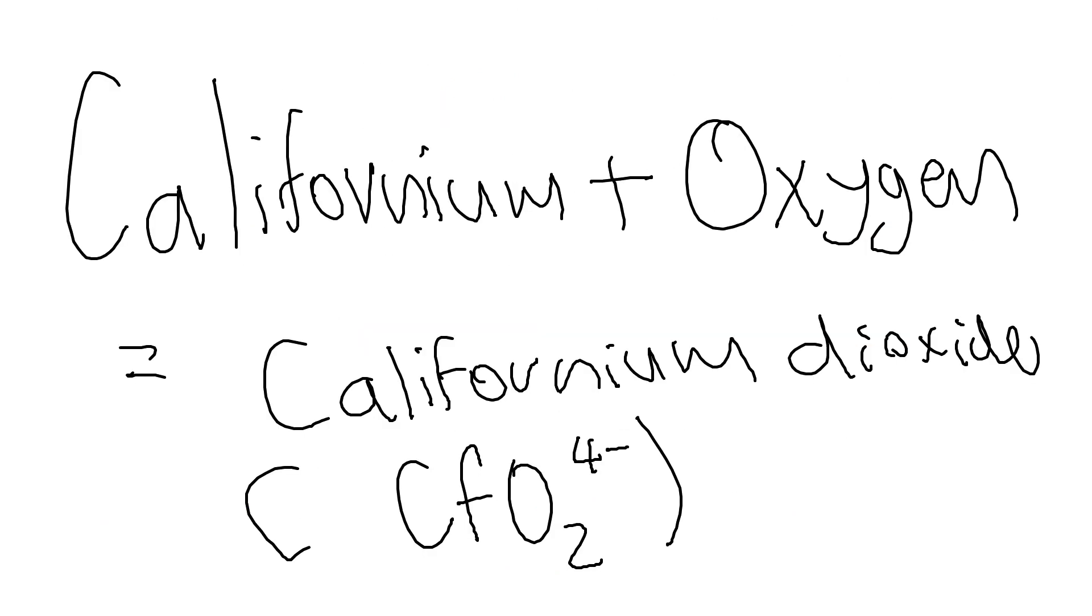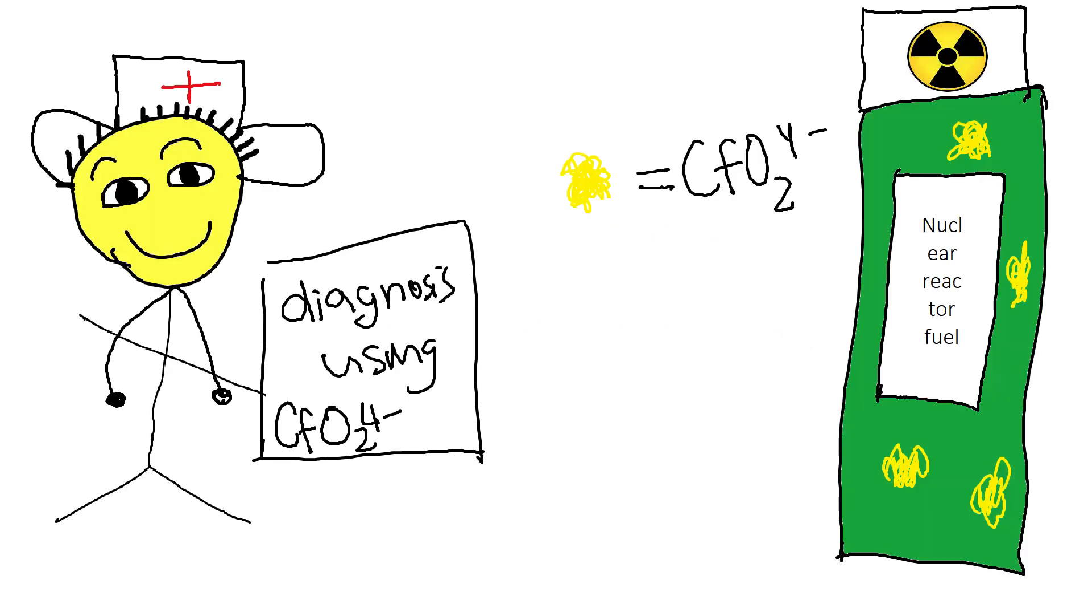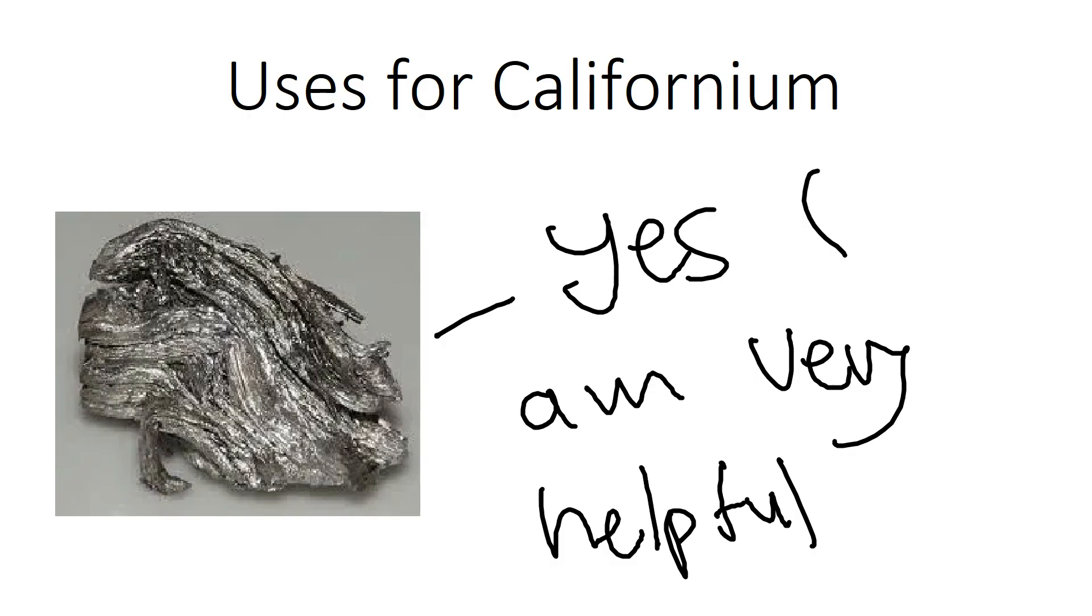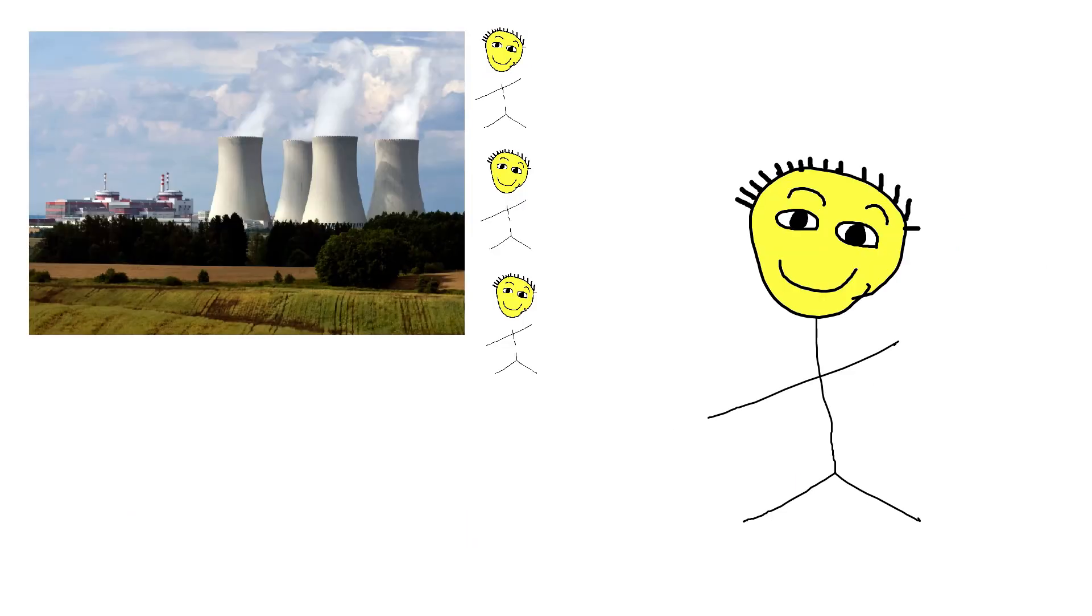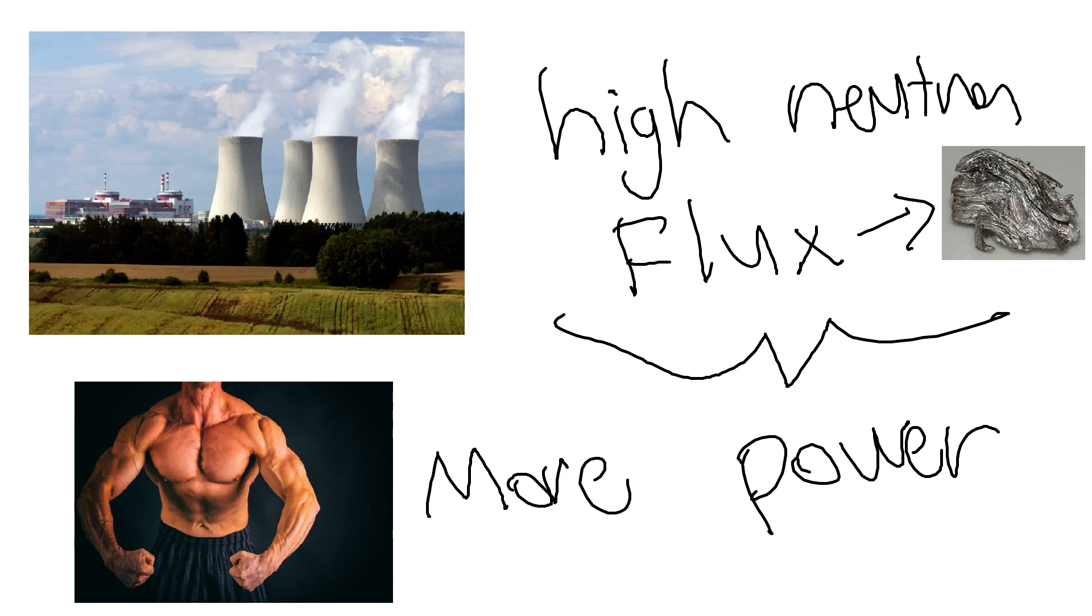Californium plus oxygen equals Californium dioxide. Californium dioxide is used in a variety of applications such as medical diagnosis and fuel for nuclear reactors. Uses of Californium: Californium is a radioactive element that can emit neutrons at a high rate, making it have many uses. One use is in nuclear reactors, where Californium's high neutron flux allows greater power output and low neutron energy, which reduces the intensity of fission byproducts and makes it ideal for power production.